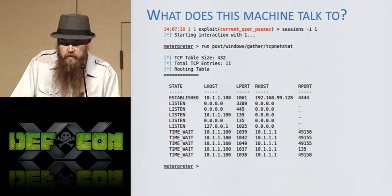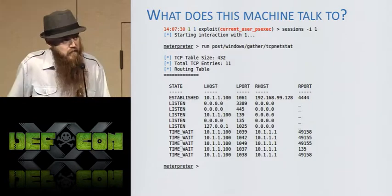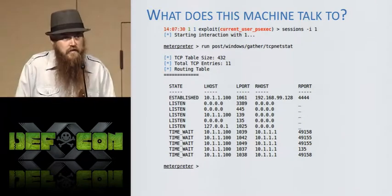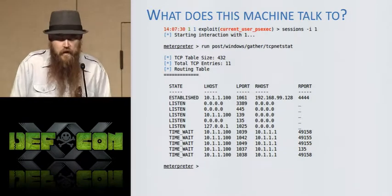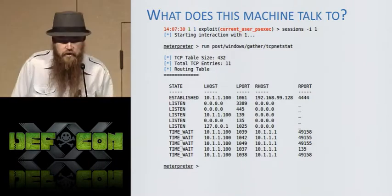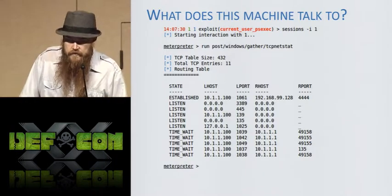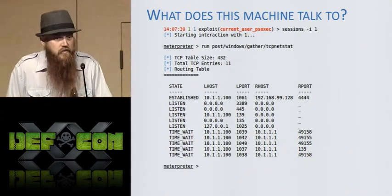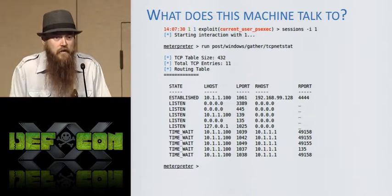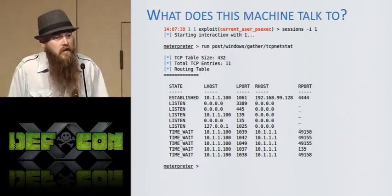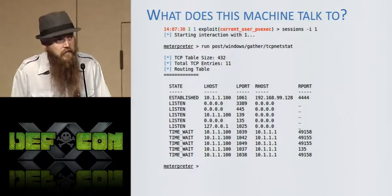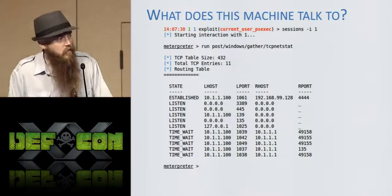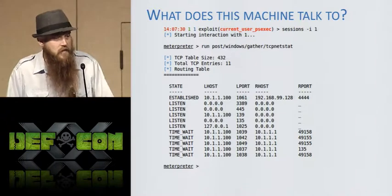Metasploit does this with the TCP Netstat module, which does exactly what it sounds like — it's Netstat. It gives you a list of things the machine is connected to and servers that are listening. This simple little module gives you a lot of information and saves you the effort of having to drop to a shell. This uses Railgun — and if you're interested in Railgun and the Windows API, I highly recommend you stick around for Dave's talk after this one about owning all the things through Railgun, which is a Windows API bridge for Metasploit.